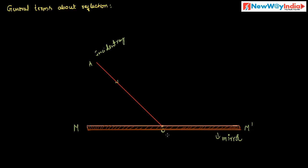What is the point of incidence? A point on the surface of the mirror where an incident ray strikes is called point of incidence. Here O is the point of incidence. Next, reflected ray: the ray of light which bounces off the surface of the mirror is called reflected ray.